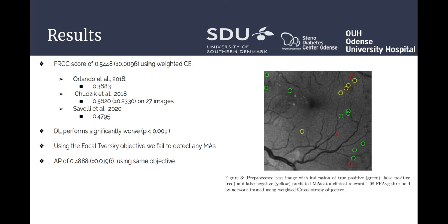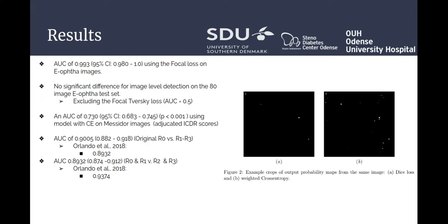The example illustrates the difficulty in detecting microaneurysms due to their size and their similarity to other image features. The highest AUC of 0.99 is achieved using focal loss on the E-Optic images, but there is no significant difference for image-level detection on the 80 images, excluding the focal Tversky loss with an AUC of 0.5. For detection of ICDR level 1, we achieve an AUC of 0.73 using a model trained with cross-entropy on the Mesidor images. Comparing our method to that by Orlando et al., we see that we achieve similar results. On the right, we see example output probability maps from a network trained using Dice loss on the left, and weighted cross-entropy on the right.